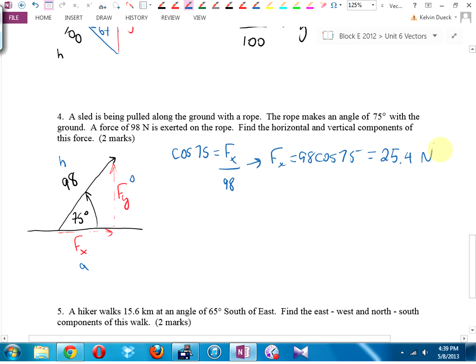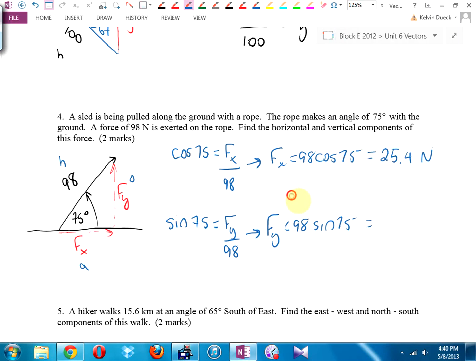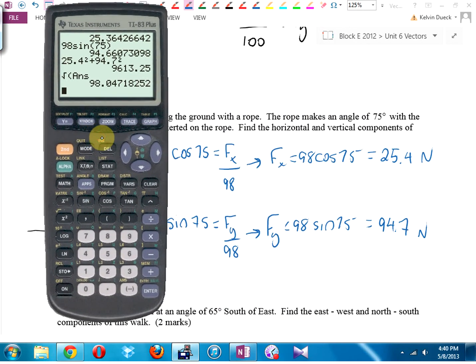One mark for that. Sine 75, yes, that's sine, Doug, not sin, is going to be opposite over hypotenuse. It's going to be 98 sin 75. 94.7. And remember, whenever I find components, if it's a right-angled triangle, I can always do a quick check. I can see if Pythagoras works. 25.4 squared plus 94.7 squared equals square root. That should be really close to 98. Yeah, it is close to 98. I'm pretty sure I'm right. Yay!